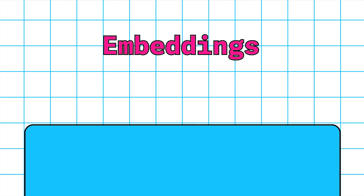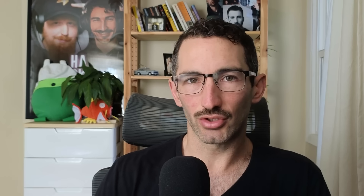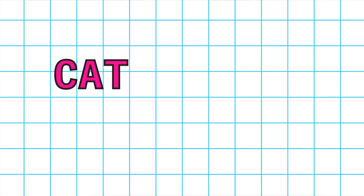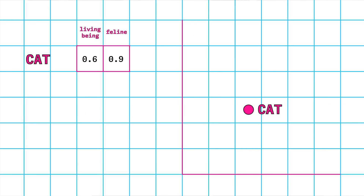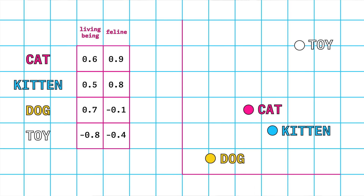It determines the strength of the association between words using something called embeddings. Embeddings are essentially a list of numbers that represent a certain thing, and when we're dealing with language models, that thing is probably a word. To give an oversimplified example: imagine charting words onto a two-dimensional graph using x and y coordinates — you assign each word an x and y coordinate. As a result, words that are semantically similar end up with similar coordinates, appearing in the same regions of the chart, while other semantically similar groups cluster together in different areas.